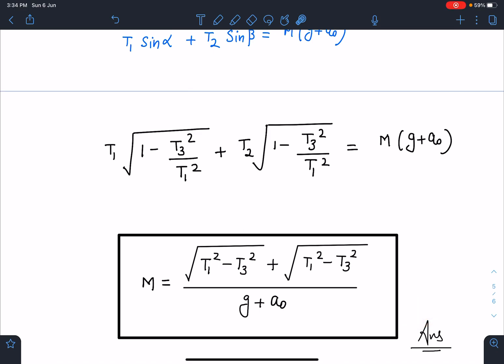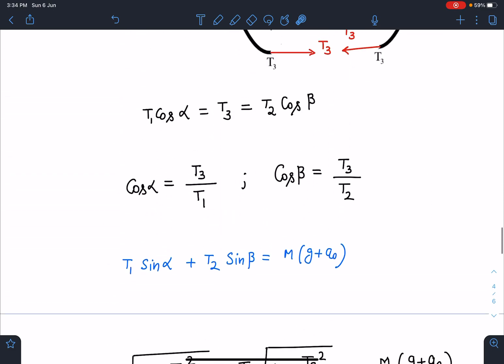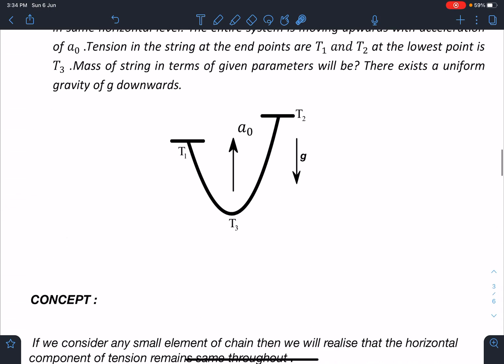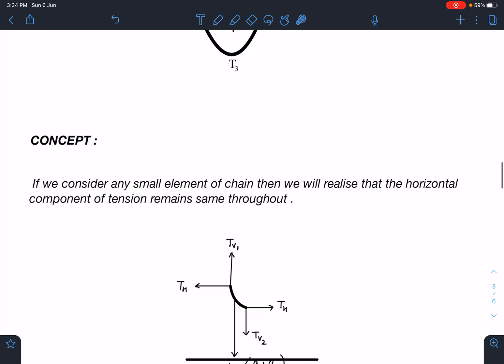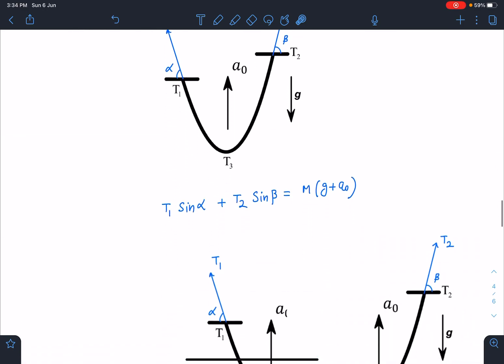One important remark about this problem is it doesn't matter whether chain is uniform or non-uniform - in both cases we are going to get the same expression. If a₀ is not there, then only g will come in the denominator. It's a modification of the problem which we see normally in classes. Such questions can definitely come in JEE Advanced type exams. They are easy, and yet many people fail to solve these problems.